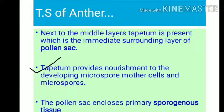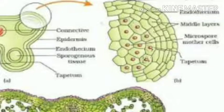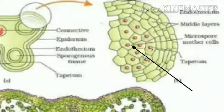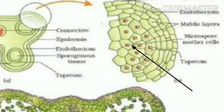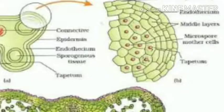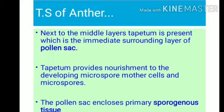Tapetum provides nourishment to the developing microspore mother cells and microspores. The pollen sac encloses the primary sporogenous tissue. This sporogenous tissue is present inside the pollen sac.